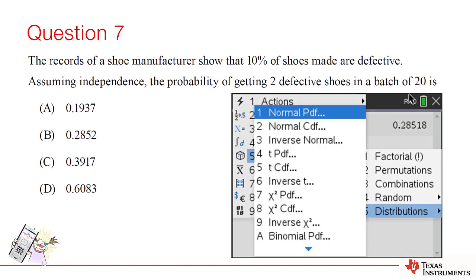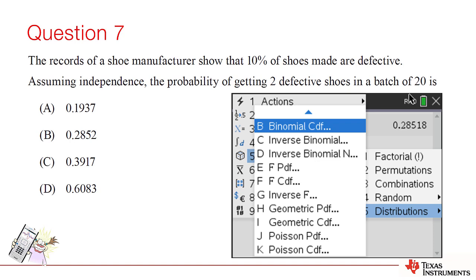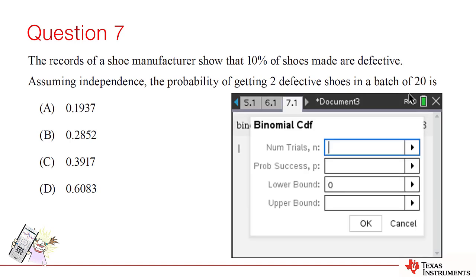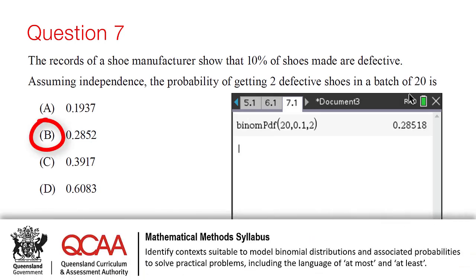If we'd incorrectly chosen binomial CDF, we would be required to enter the minimum and maximum number of successes, or the range of successes. So, our answer is option B.